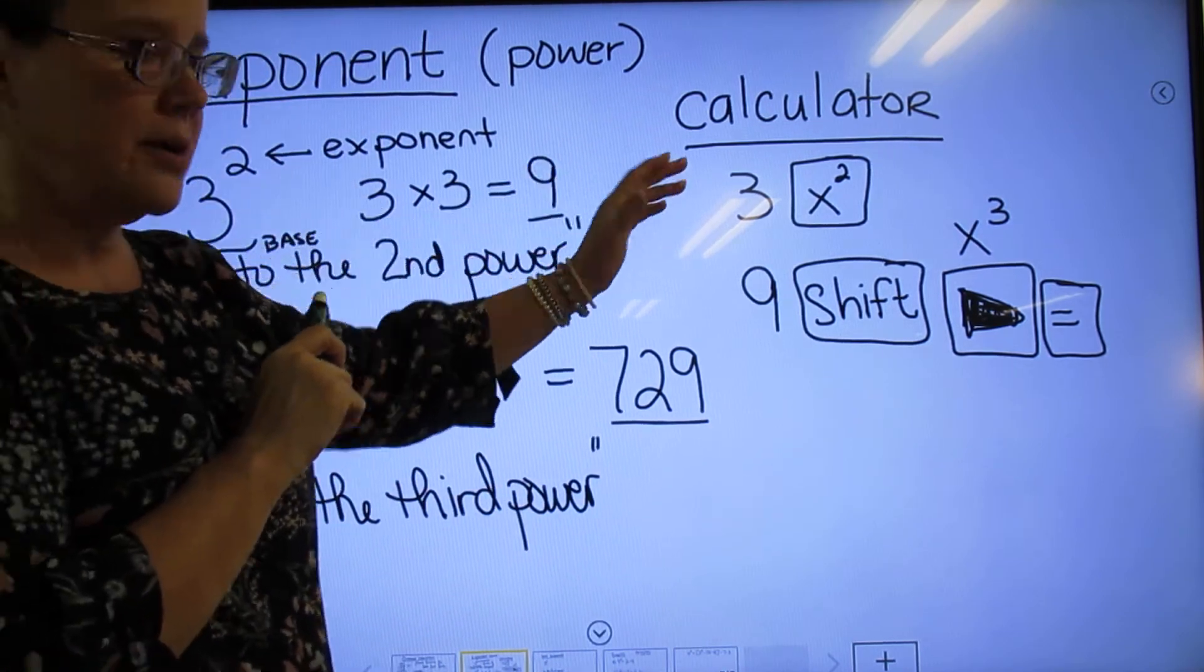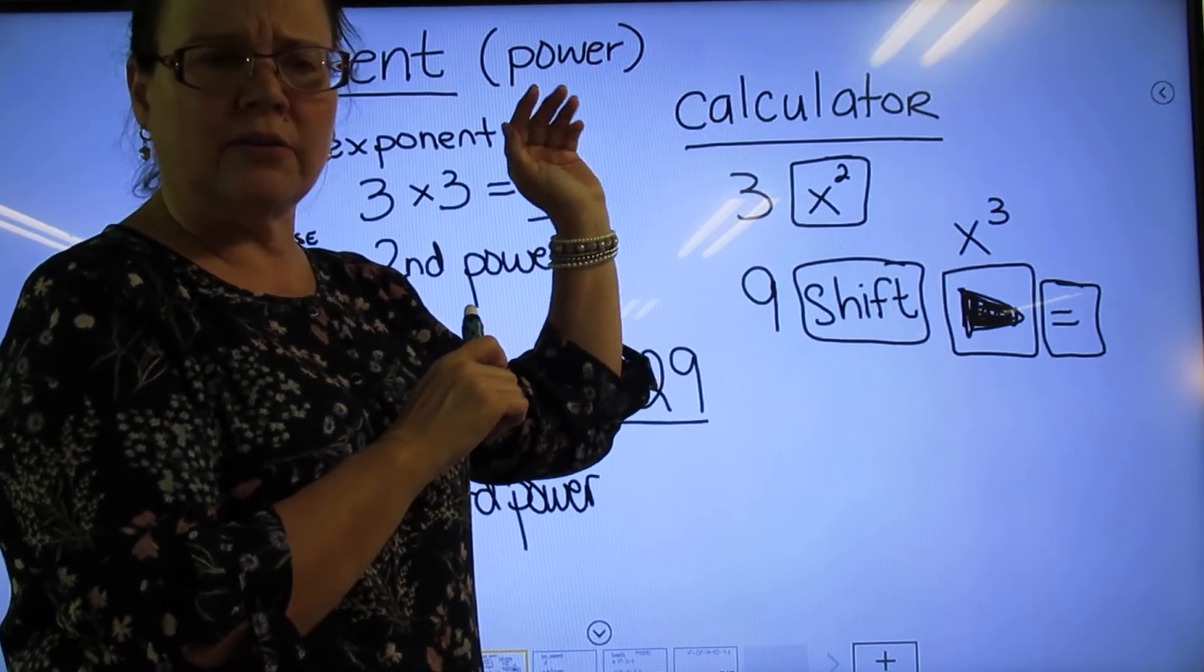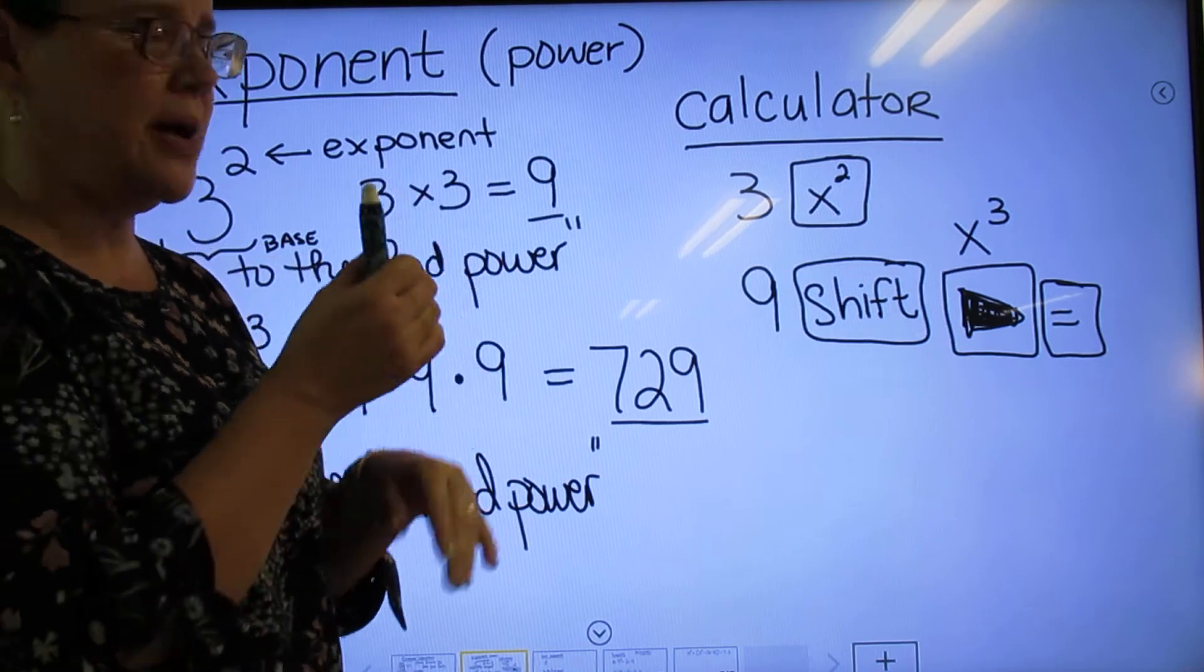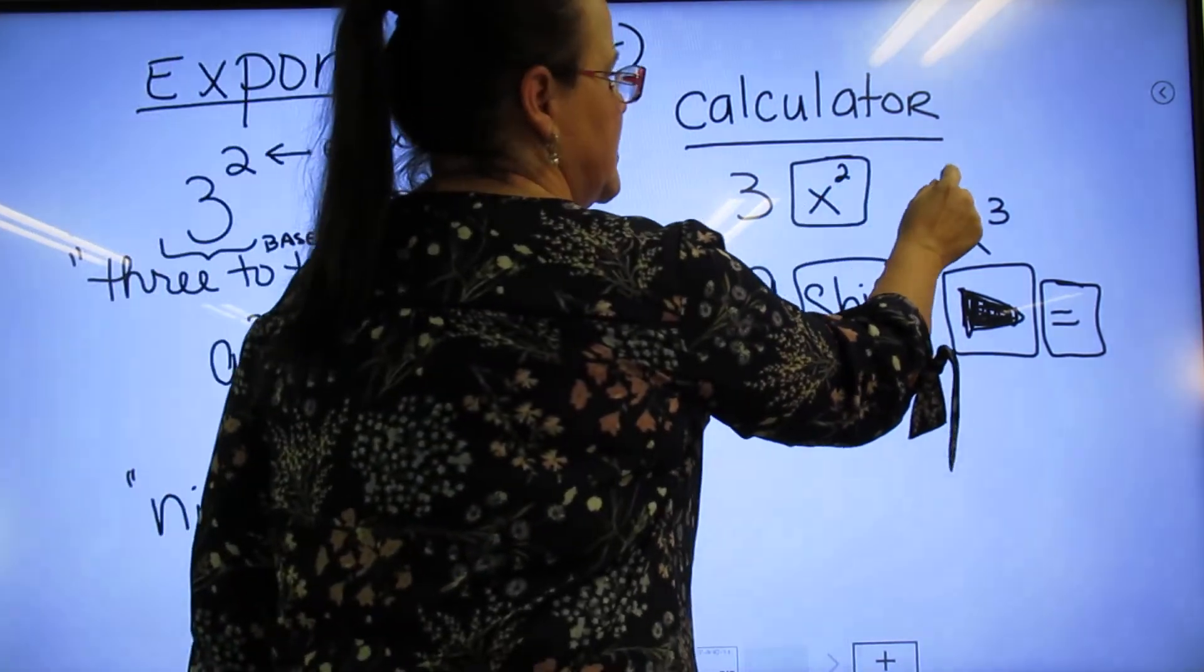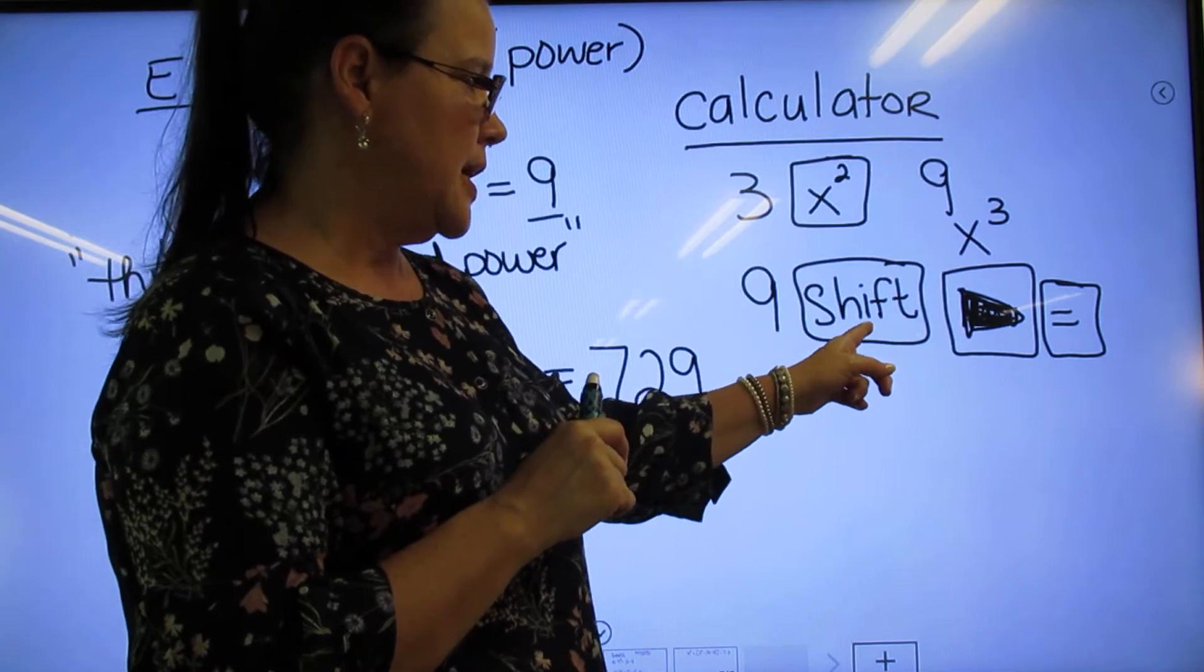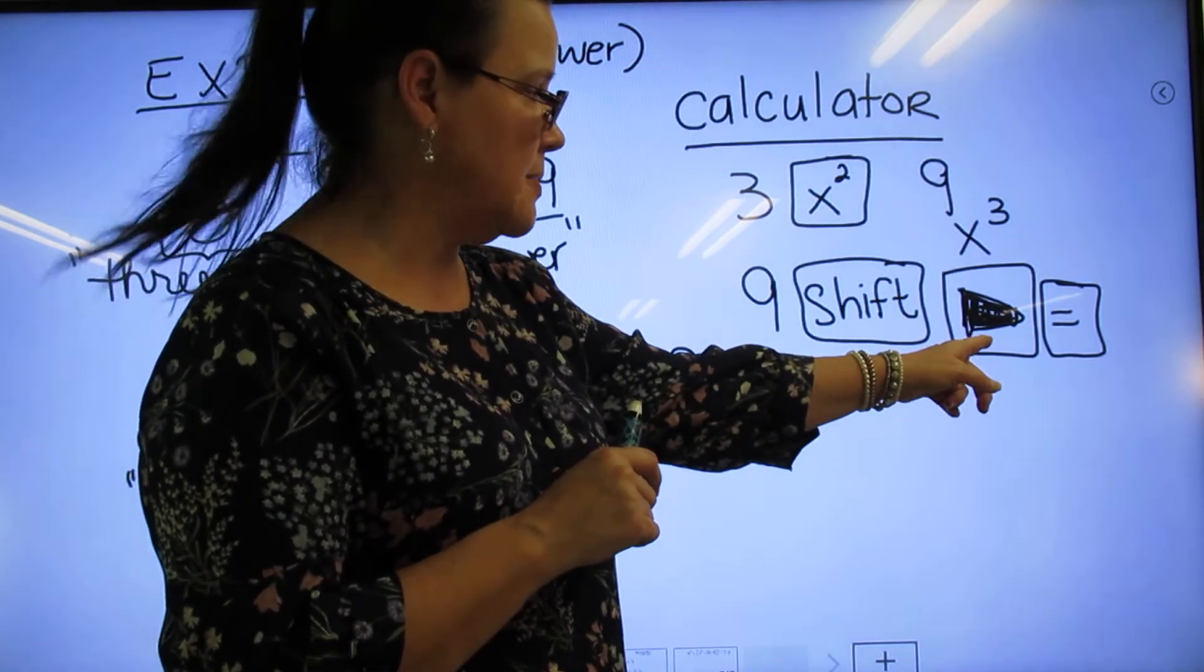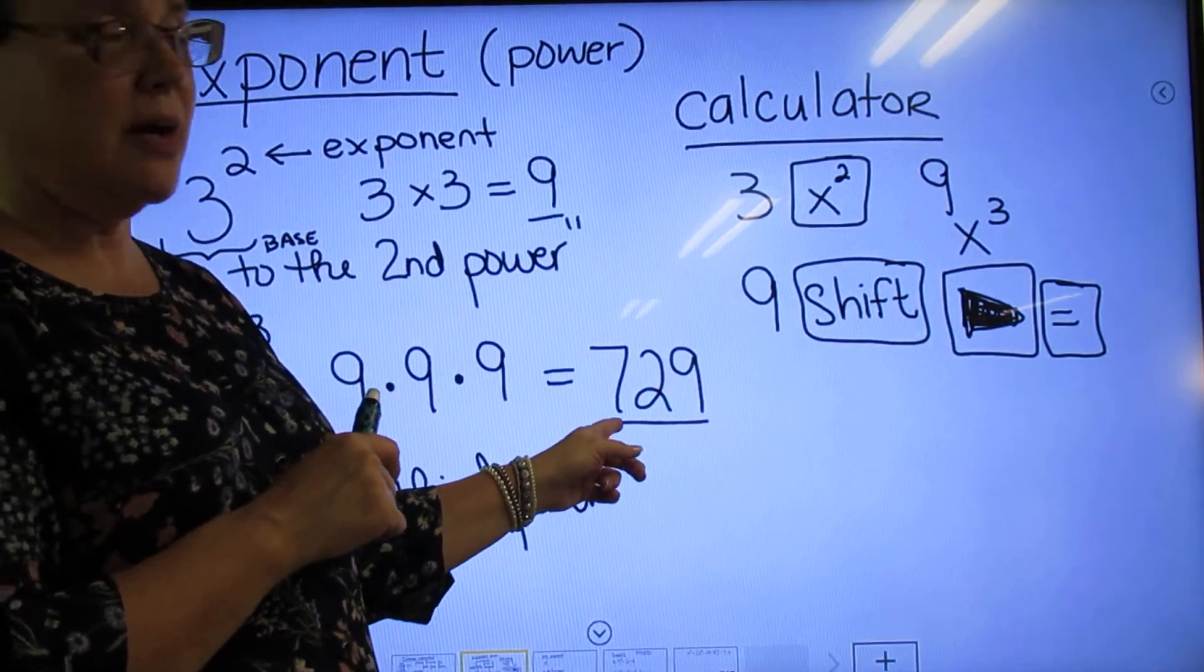However, on the calculator, there's an X squared button. It's the third button on the first row. I think I've talked about this in other videos. 3 X squared would give you 9. And then with the 9, shift, and then there's a little play button in the third row, second button in from the right. Then you hit equal, and that should give you 729.